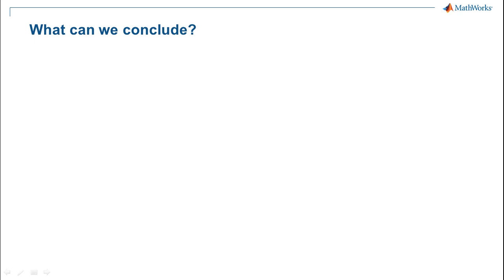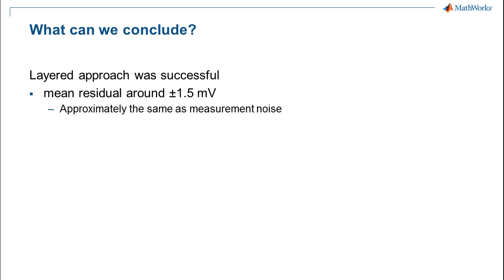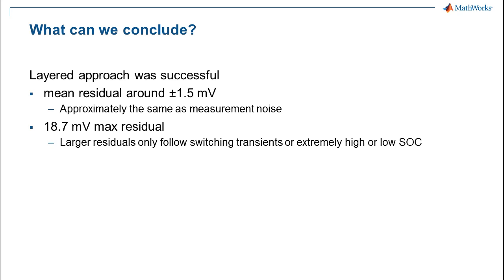What can we conclude from this work? We think the layered approach was very successful. Mean residuals to the experimental data were within a couple of millivolts, similar to the noise in the measurement itself. It really can't get much better. At transients around each pulse, we saw residuals ranging from a few millivolts up to a max of about 18 millivolts. Whether this is acceptable may depend on the application, but it can certainly be improved by adding to the model. We cut these in half when we added current dependence to the RC time constants, and you could also add more RC branches to increase model flexibility to match data.